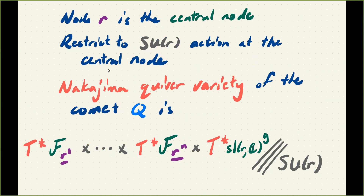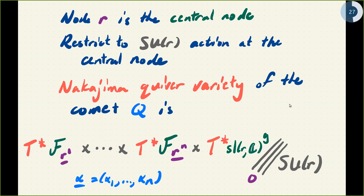I restrict without cost to an SU_r action at the center, and I'll use that action to define a quotient—the Nakajima quiver variety of the whole comet. Fortunately we don't need to start from scratch, because this is reduction in stages. What I have is a cotangent bundle of a partial flag variety for each of my n arms, then the a-matrices on the loops are in sl_r(C), and there are g of them. Taking T* by doubling, I form the simple Cartesian product and take a hyperkähler quotient by the action at the center at level zero, with the α's encoded in the partial flag varieties.